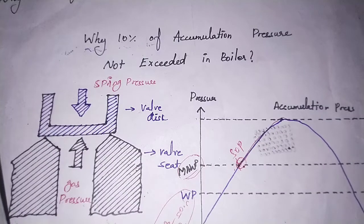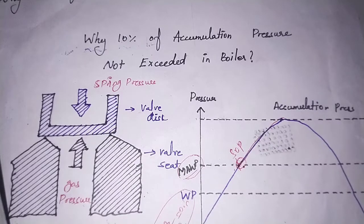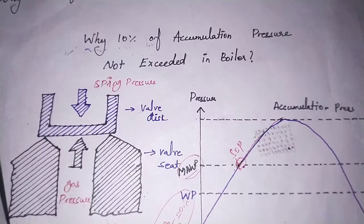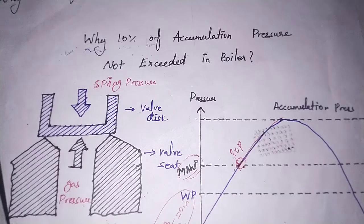Welcome back to our channel. In this video we discuss why 10 percent of accumulation pressure is not exceeded in the boiler — what accumulation pressure is, why the boiler does not exceed it, and what happens to the boiler and the safety valve if it does.